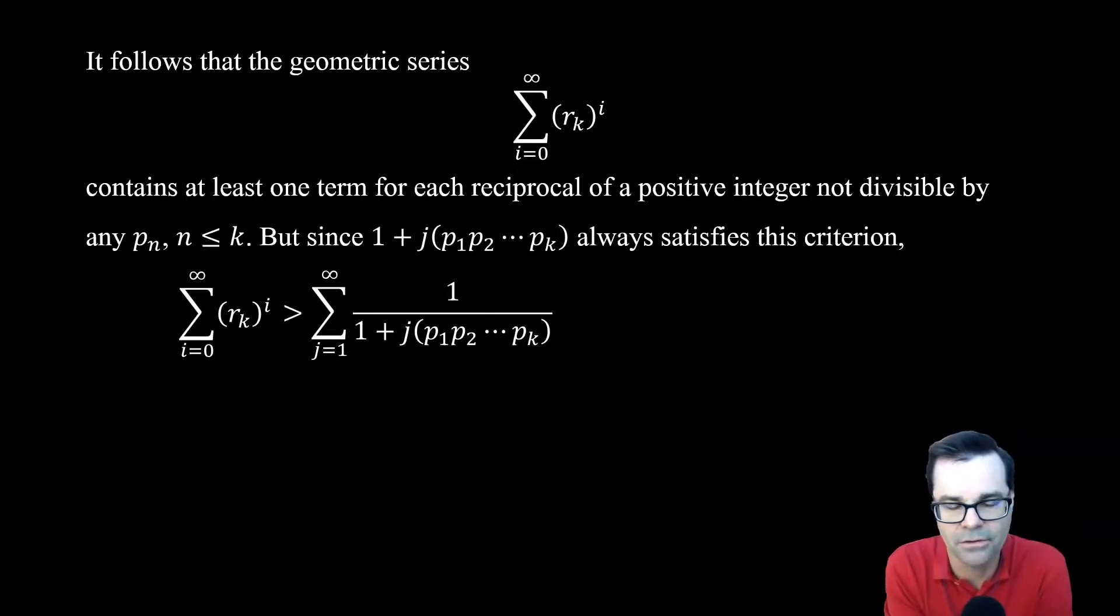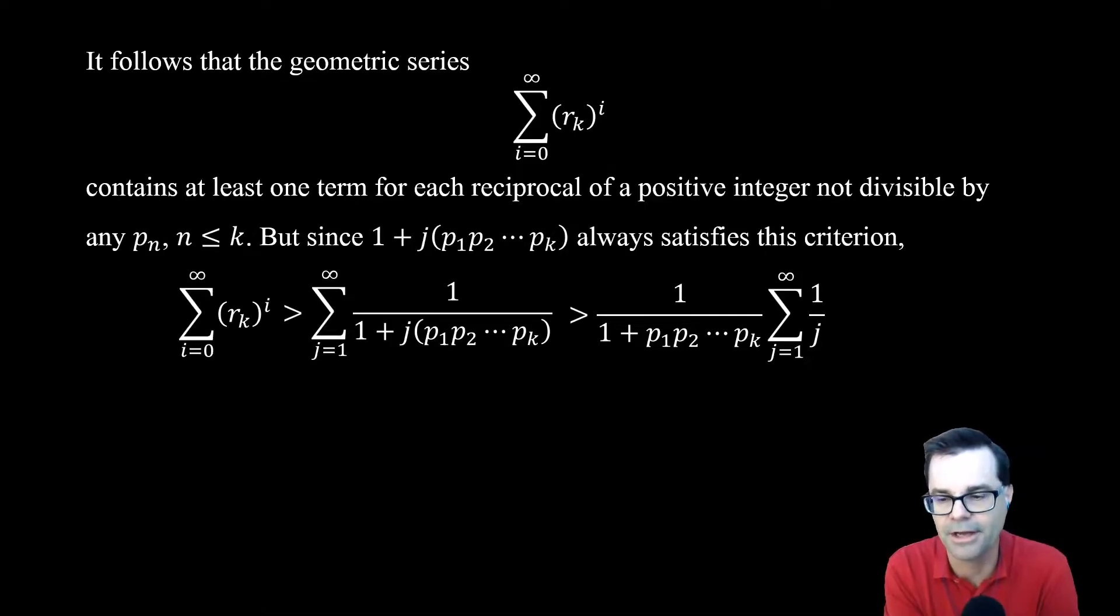But now, this looks remarkably like just the harmonic series, because the index is just j. Everything else is just constants. And we can do a direct comparison test if we replace 1 with j. That's going to make every denominator bigger, which is going to make every term smaller. And we see that this is greater than 1 over 1 plus the product of the first k primes times the harmonic series.